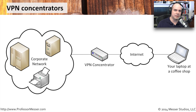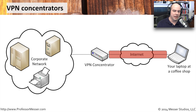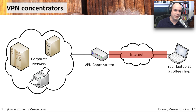In steps the VPN concentrator — this is exactly what it'll do. By using some software in your operating system or on your machine, you're able to create an encrypted tunnel through the Internet to the VPN concentrator. And it may not just be one person — it may be many, many different people, in some cases hundreds or thousands of people, connecting through these encrypted tunnels back to the VPN concentrator.